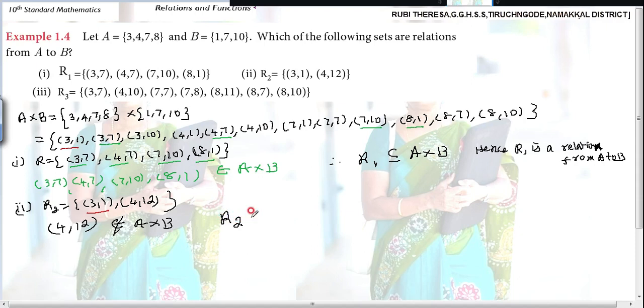So, R2 is not a subset of A cross B. Hence, R2 is not a relation from A to B. Then third one.